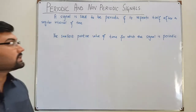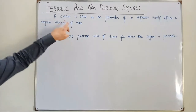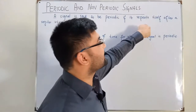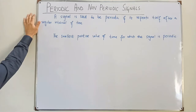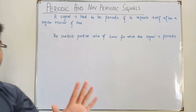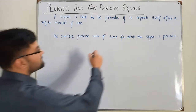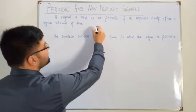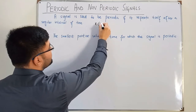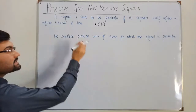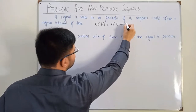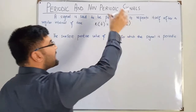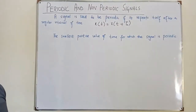A periodic signal is said to be periodic if it repeats itself after a regular interval of time — something you may know from class 9th or 10th. So if x(t) is a value at any particular instant, and you check after some time T₀, it will have the same value as x(t).